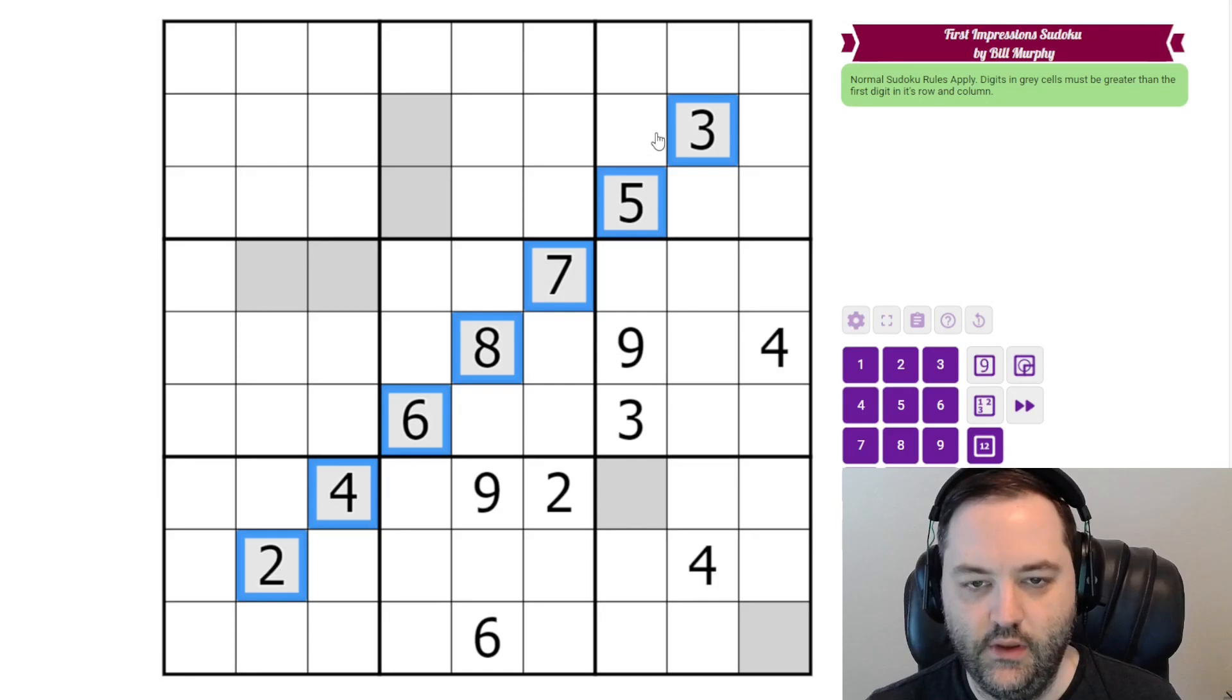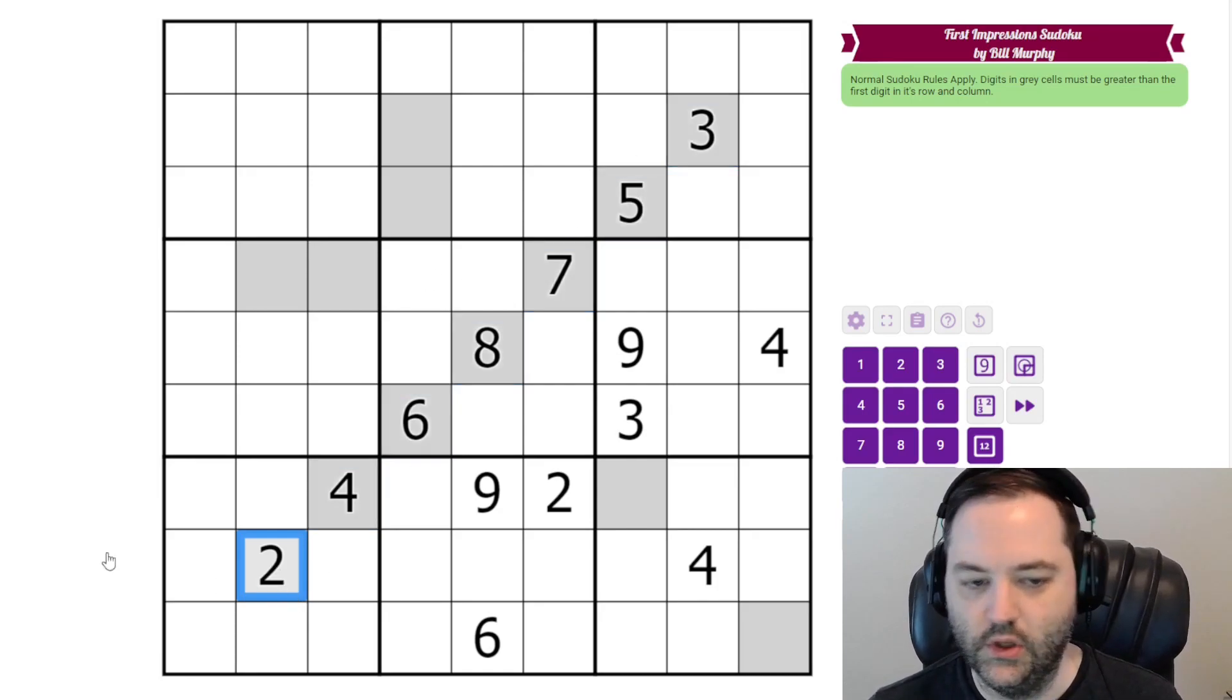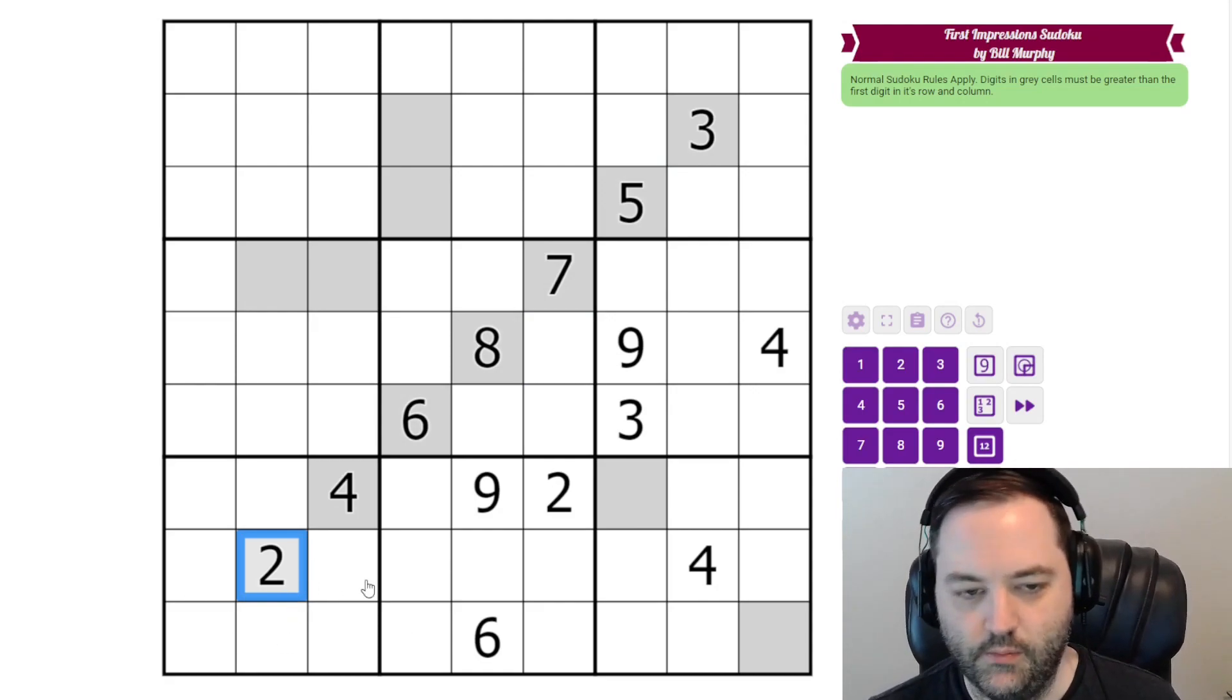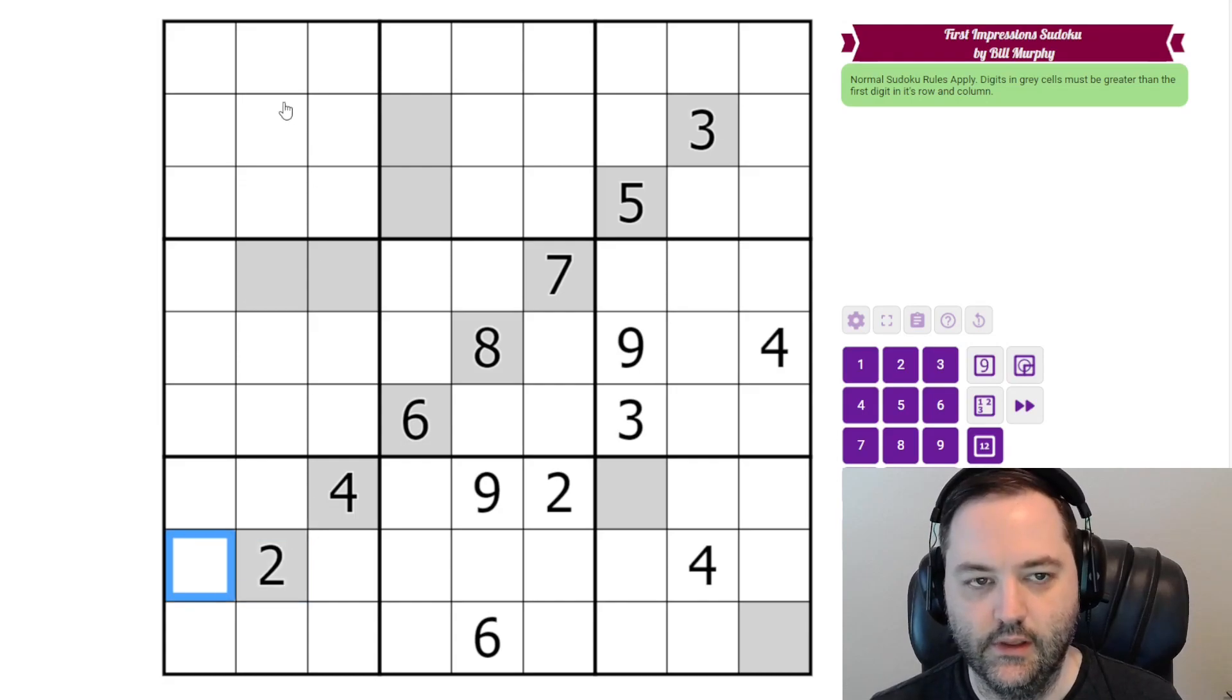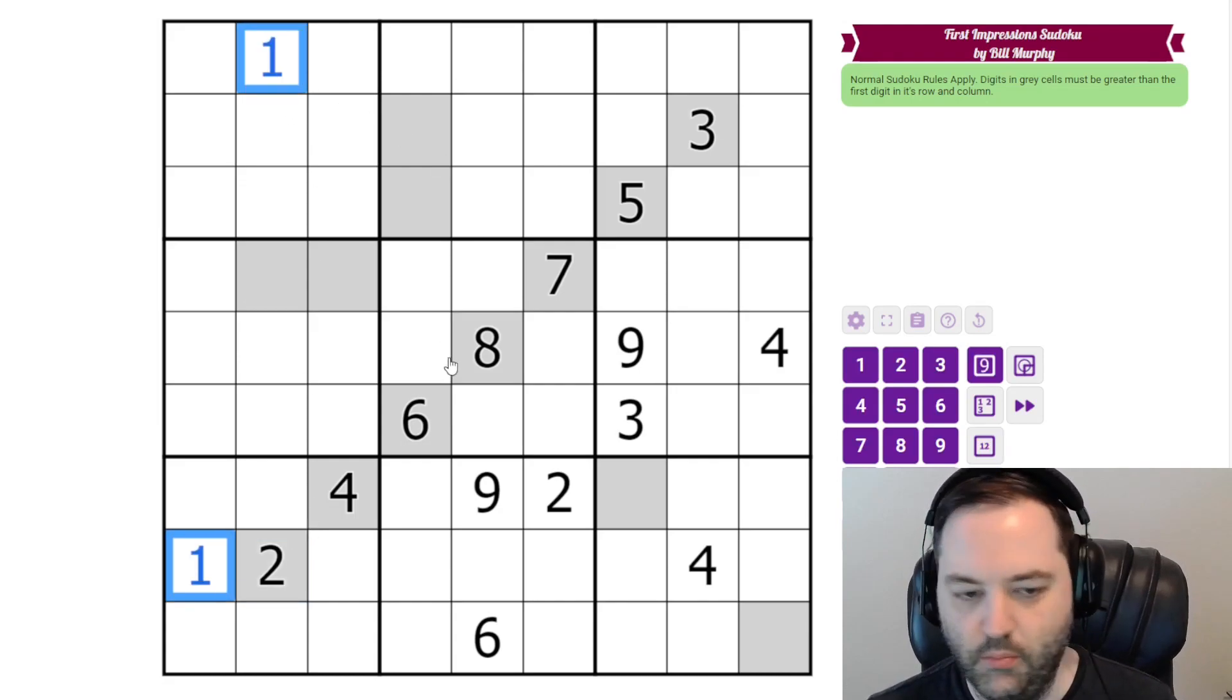And because the digit in the gray cell has to be bigger, we're going to look at the smallest digits in the gray cells to start with. So the smallest digit we have is 2, and the only digit that is less than 2 is 1. So both of these have to be 1. This is the first cell in the row with the 2, this is the first cell in the column.